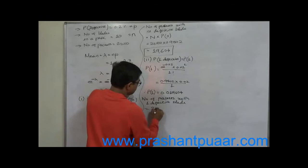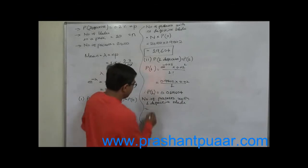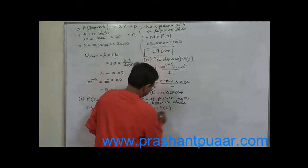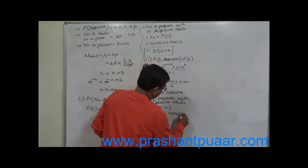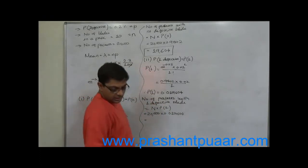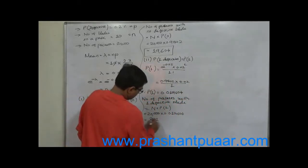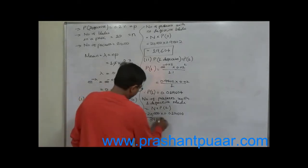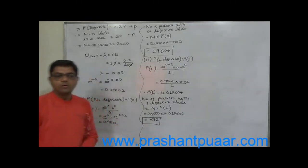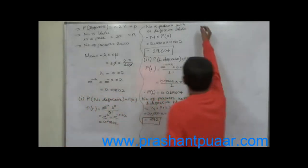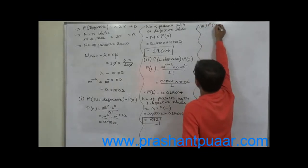The number of packets with one defective blade equals total number of packets into probability of one defective blade: 20,000 × 0.019604 = 392.08, approximately 392 packets out of 20,000 can have one defective blade.